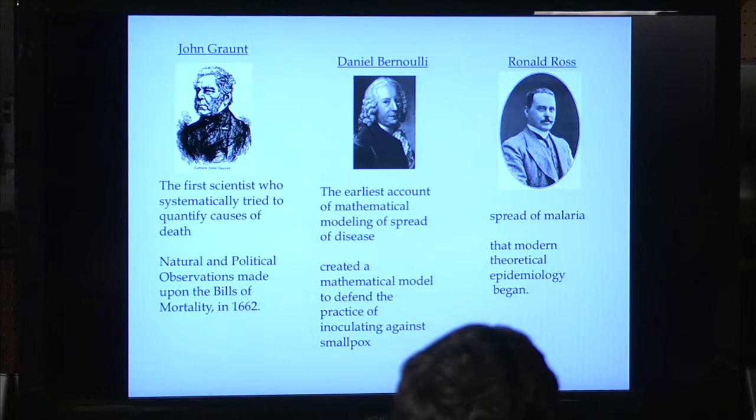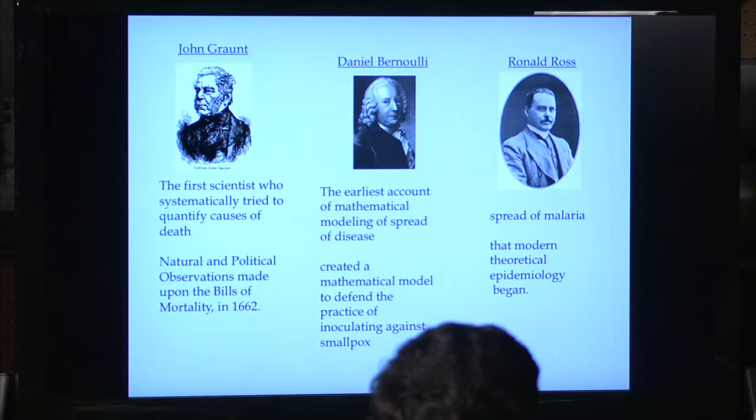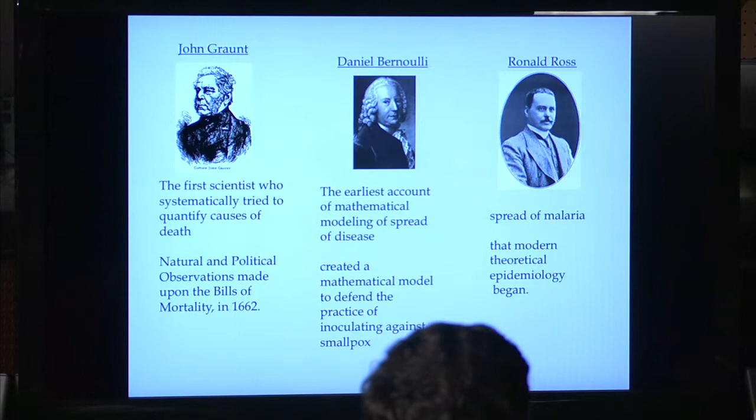The second person is Daniel Bernoulli. He was an early mathematician who did a lot of work on smallpox disease. In 1766, he researched how vaccinations would help slow down the disease. The last key figure is Ronald Ross, who won the Nobel Prize for his research on the spread of malaria and was the first to create mathematical models of how to control diseases and how they spread throughout a population.